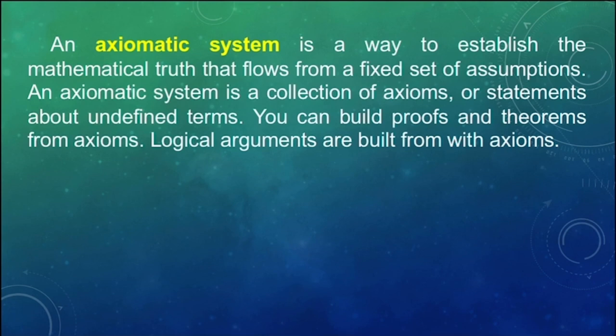An axiomatic system is a way to establish mathematical truth that flows from a fixed set of assumptions. An axiomatic system is a collection of axioms or statements about undefined terms. You can build proofs and theorems from axioms.